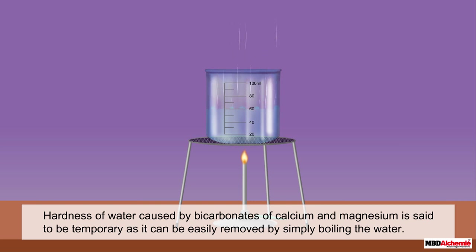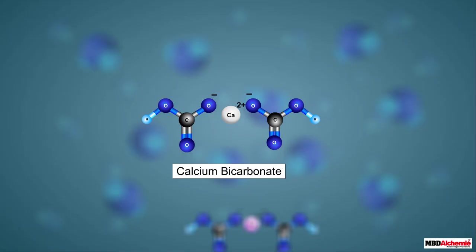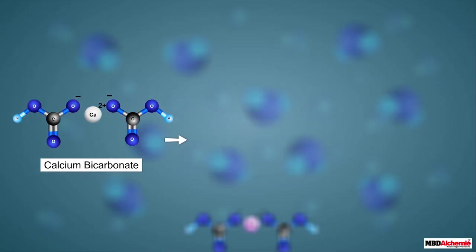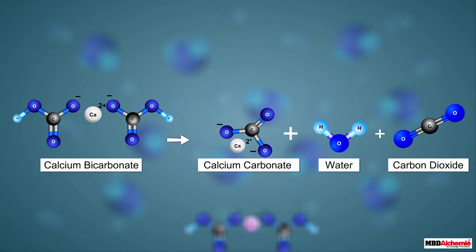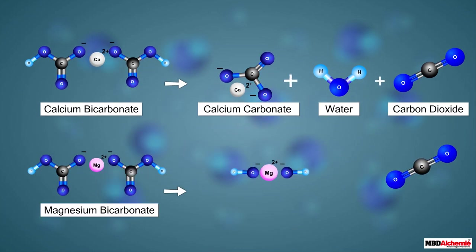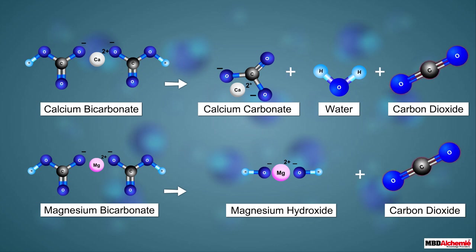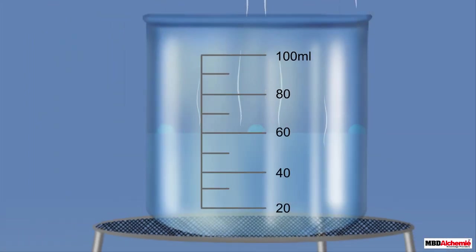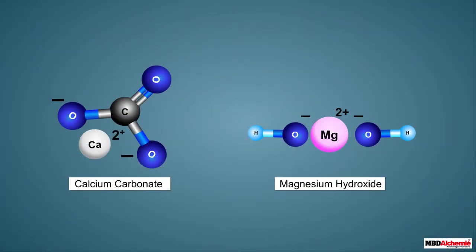Temporary hardness can be easily removed by simply boiling the water. When temporary hard water is boiled strongly, calcium bicarbonate changes to calcium carbonate, water, and carbon dioxide. At the same time, magnesium bicarbonate changes to magnesium hydroxide and carbon dioxide. The resulting carbon dioxide escapes to the surroundings.